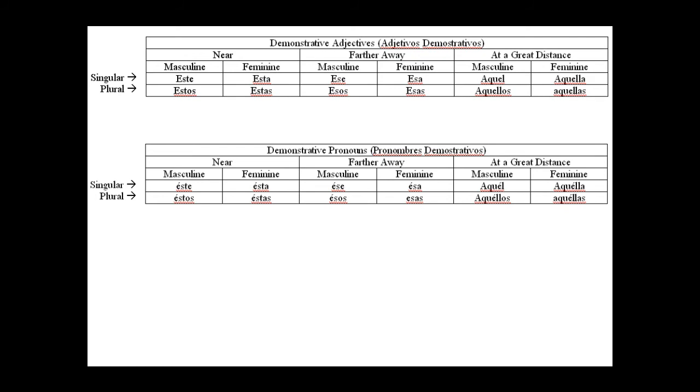And then lastly, at a great distance, if I want to say that rescue is dangerous, I would say aquel rescate es peligroso. I can eliminate my noun rescate, and put an accent mark over the e on aquel, and say that one is dangerous. Aquél es peligroso.